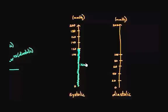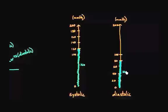For diastolic pressures, those numbers are going to be lower. Anything below 80 is considered in that safe green zone. I want to be very specific — I don't mean that a blood pressure of 5 would be good. What I mean is that you don't have hypertension, meaning you don't have high blood pressure. That's very different from having low blood pressure. So the green zone here refers only to not having high blood pressure.